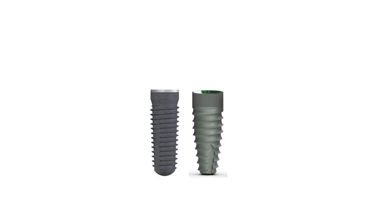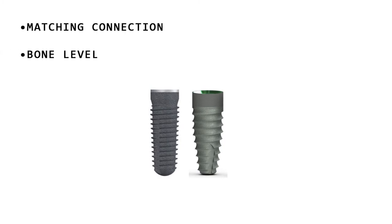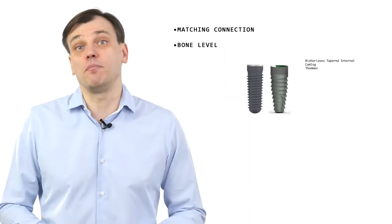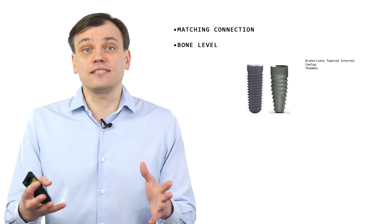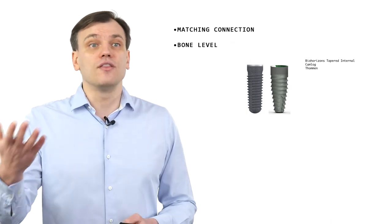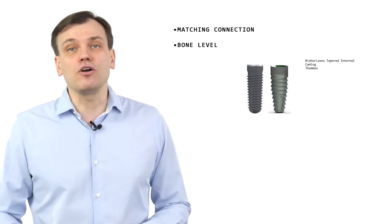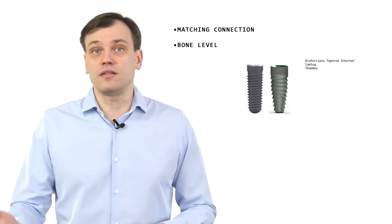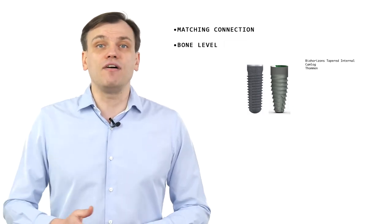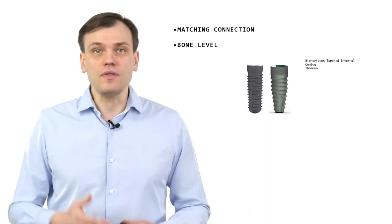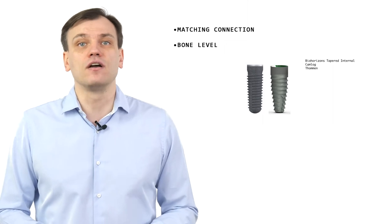Let's start with matching connection bone level implants without platform switching and without conical connection. How do we place them? What is the recipe for their placement? As examples we can relate to: the BiHorizon Stapered Internal implant, the Camlog implant, or the Tomem implant — these are bone level implants with matching connection and no platform switching.